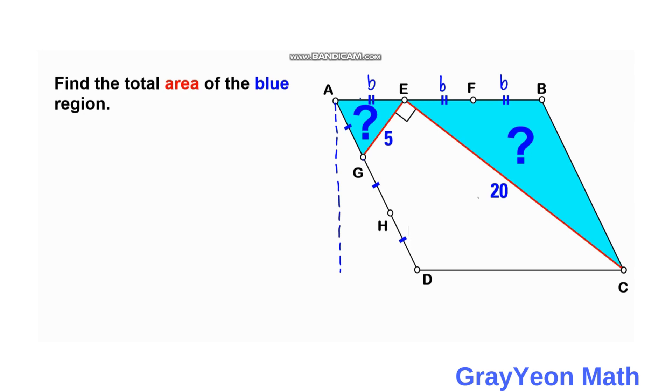And since this length AD is divided into 3, we can actually draw a line from G and H horizontally.